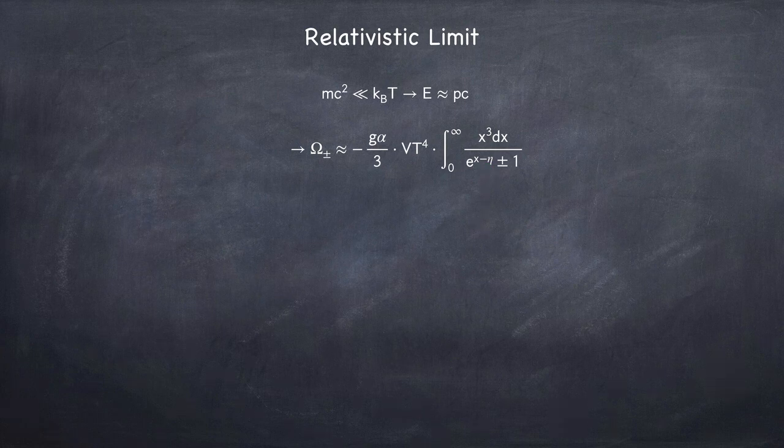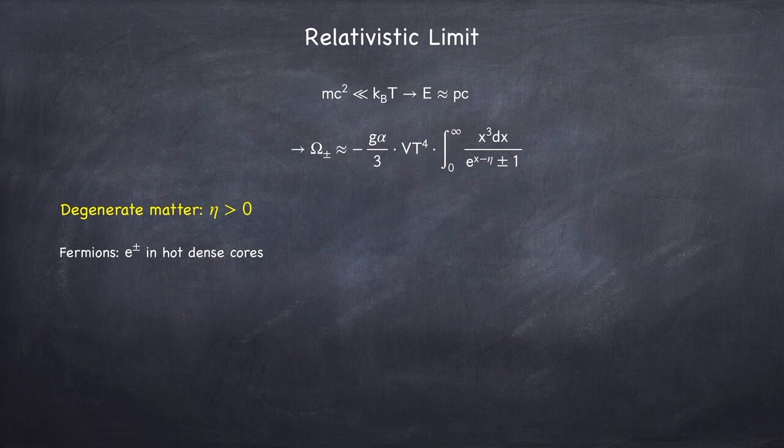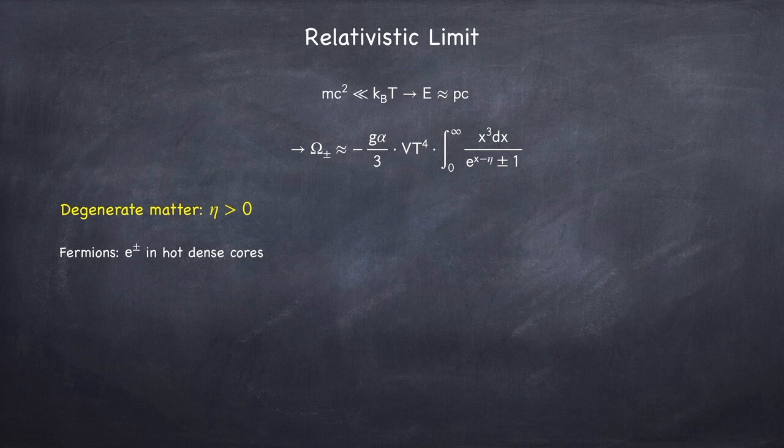So let's look at the case for degenerate matter first. When it comes to stars, this will only apply to fermions. We won't see any cases of relativistic degenerate bosons. And generally speaking, this will apply to electrons and positrons in hot, dense cores.